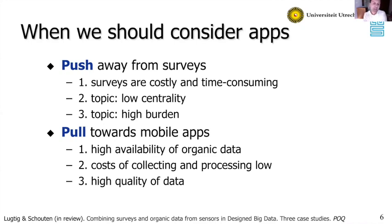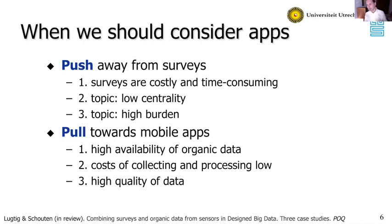Often respondents may know about their behavior or attitudes but it takes a lot of time to do a survey. For example, if you're interested in what people spend their money on, people often know roughly, but it's really hard to get a fine-grained and detailed picture of exactly what they spend and how much. On top of these specific reasons, there's a general push away from surveys because they are costly and time-consuming, and a pull toward mobile apps when the data can be collected more or less automatically — what I call organic data.